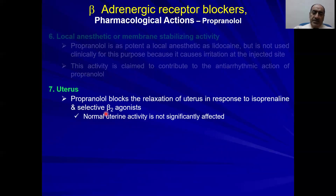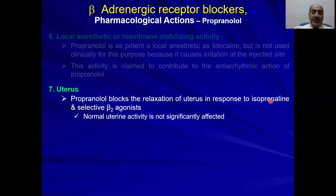On the level of the uterus, the sympathetic nervous system causes uterine relaxation through beta-2 receptors. These drugs block the relaxation of the uterus in response to isoprenaline — a non-selective beta agonist that activates beta-1, 2, and 3 — or selective beta-2 agonists. Normal uterine activity is not significantly affected.